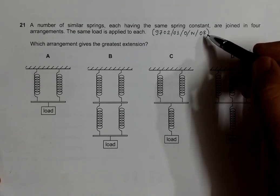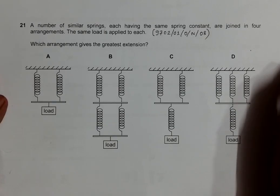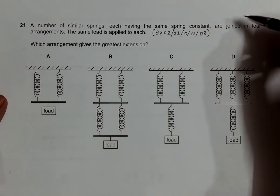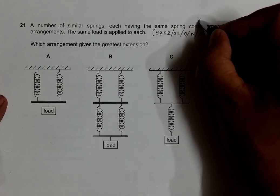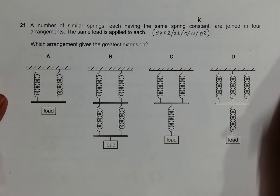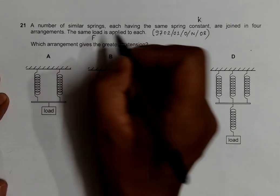This is question 21 from the 2008 October/November paper one. It says: a number of similar springs, each having the same spring constant K, are joined in four arrangements. The same load is applied to each, so the force is the same in all of them. Which arrangement gives the greatest extension?